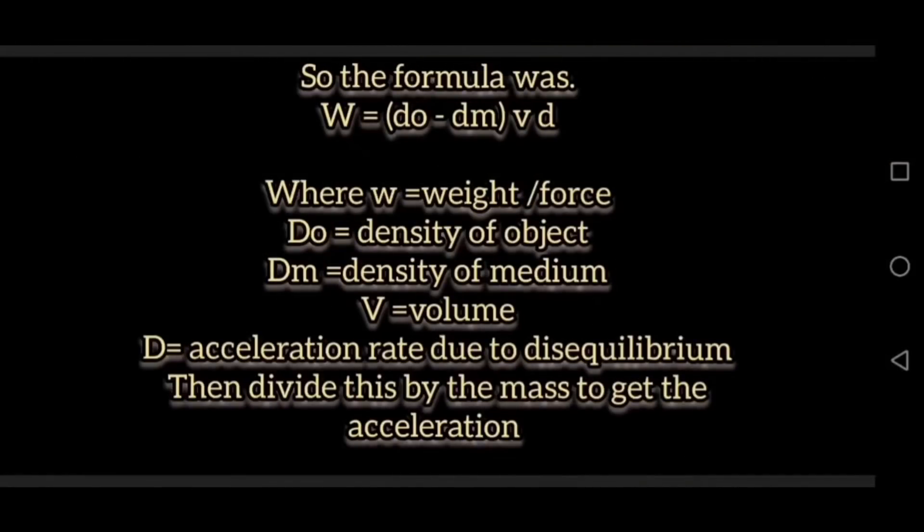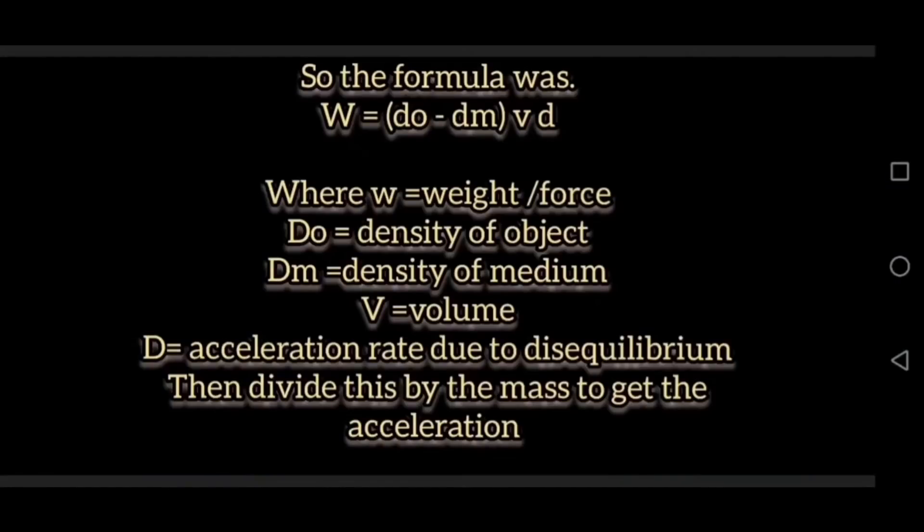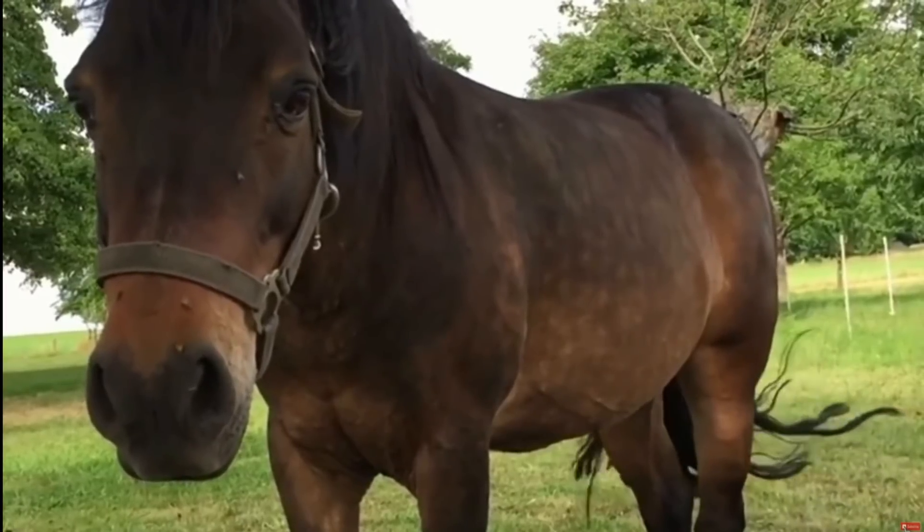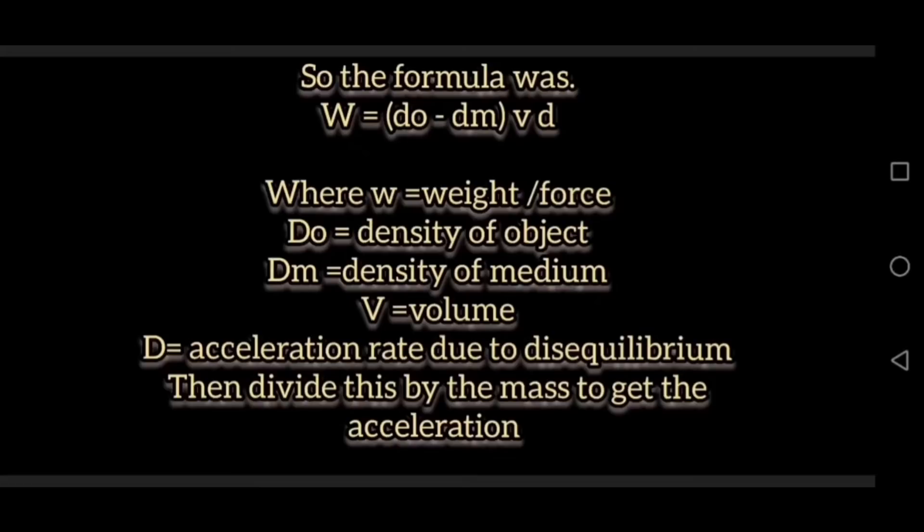So that's how you get the weight or the force by doing the density of the object minus the density of the medium times volume times the disequilibrium rate in a vacuum. So then you divide the acceleration rate, the number that that gives you at the end of doing that formula. The formula gives you weight, not acceleration rate, Richie. By the mass in order to get the acceleration. But there is another way to do it.